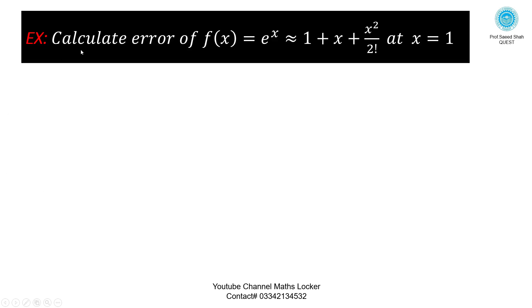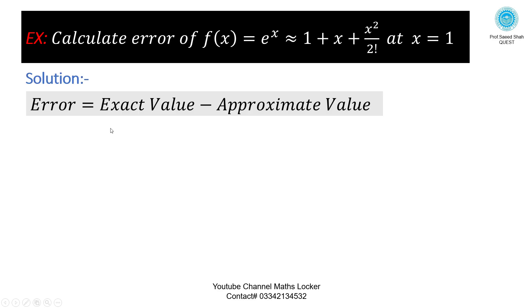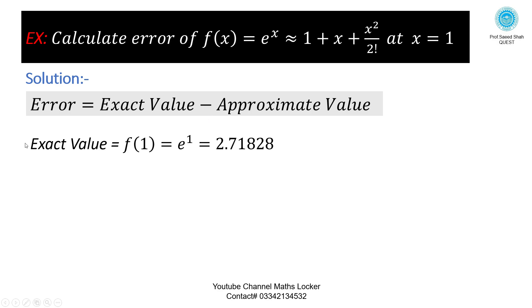Exercise: Calculate the error of function f(x) = e^x ≈ 1 + x + x²/2, at x = 1. Solution: using the formula, error = exact value minus approximate value.